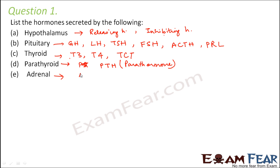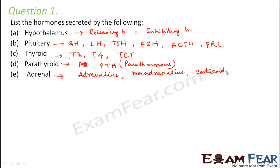Next is the adrenal gland. The adrenal medulla secretes adrenalin and noradrenaline. The adrenal cortex secretes the corticoids, which include glucocorticoids and mineralocorticoids. For the pancreas, we talk about the islets of Langerhans, which secrete two very important hormones — insulin and glucagon.